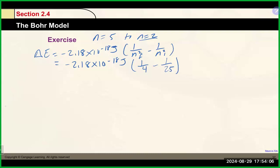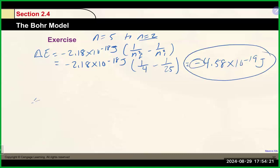Doing the math: 1/4 minus 1/25, multiplied by −2.18 × 10⁻¹⁸, gives us approximately −4.58 × 10⁻¹⁹ joules. We do get a negative value, which we expect since the electron is dropping from a higher energy level to a lower one — it has to be exothermic for the atom to release that energy.